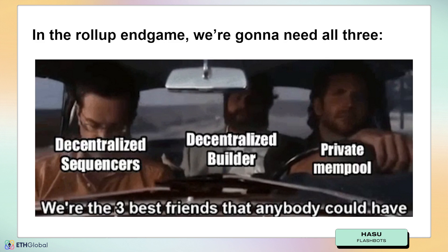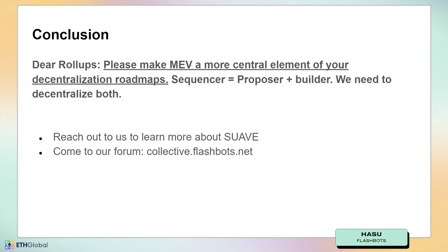So in the rollup endgame, we're going to need all three: the decentralized sequencer, the decentralized builder, and the private mempool. Otherwise, it's not going to work out. Dear rollups — please make MEV a more central element of your decentralization roadmaps. Remember, sequencer equals proposer plus builder. Don't ignore the last part. We need to decentralize both.